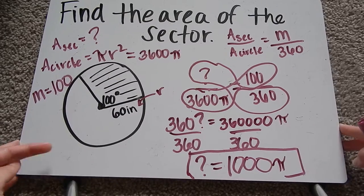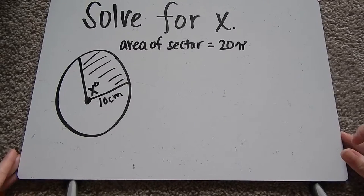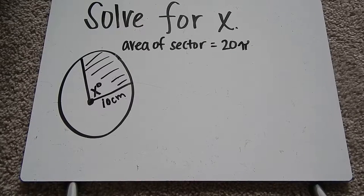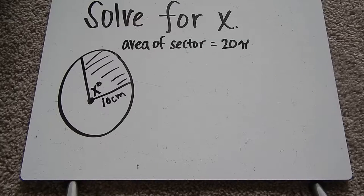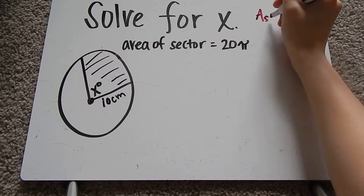Let's move on to the next example. Here it says solve for x. It also gives me the area of the sector is 20π. So I'm going to go ahead and write what I need and what I know.